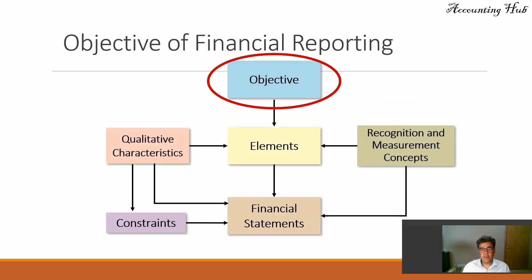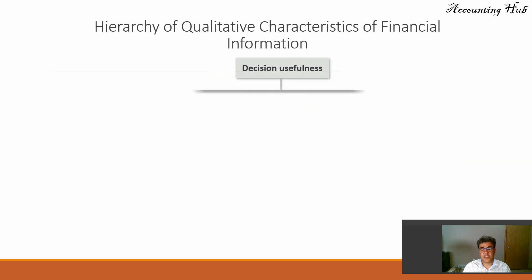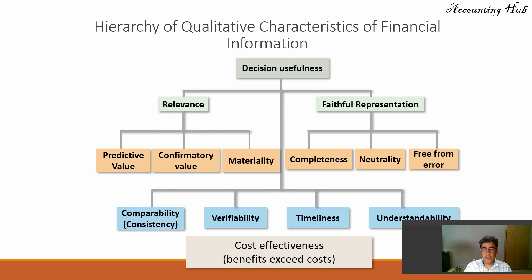The objective is: why do we have financial information? To provide financial users useful information for decision making. We do that through qualitative characteristics of financial information, and we also have some constraints. The qualitative characteristics are a very long topic, and we have a dedicated video about it linked in the video description. Basically, we need decision usefulness in our financial information.